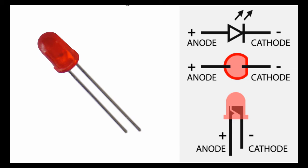An LED is similar to a diode — it has two leads. The longer lead is the anode or the positive lead, and the shorter lead is the cathode or the negative lead. The intensity or brightness of the LED depends on the amount of forward current passed through the device. The more current, the brighter the LED, but we must always take care not to exceed the maximum allowable forward current, as this could damage the LED, or if we draw more current than the Arduino output pin can handle, this could also destroy the Arduino.